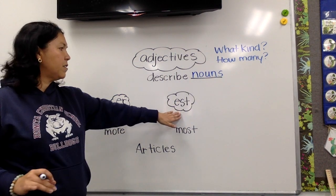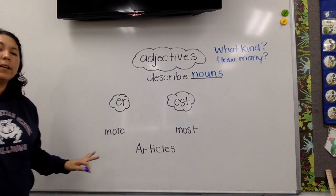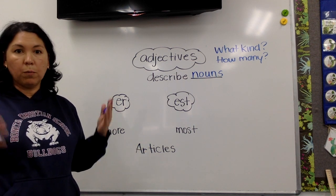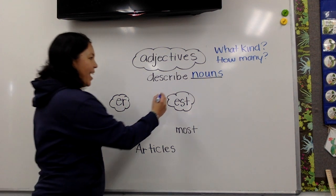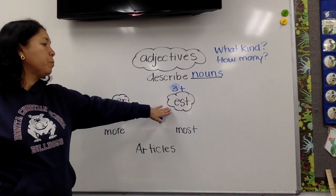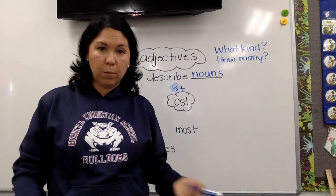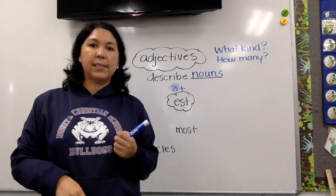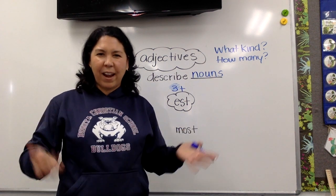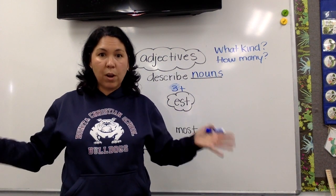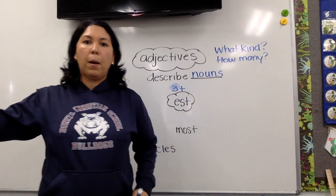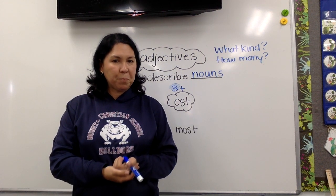Which one did we use when we were comparing more than two things, people, or places? More than two — if you said -est, you're right. So it would be three or more. For example, I've got three dogs at home: Coda, Milo, and Mitzi. If I said which dog is the smallest — see, I kind of gave it away — if there are three or more, I have to use -est. It wouldn't say 'which one is smaller.' The smallest of those three dogs is Mitzi.